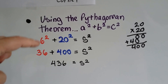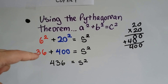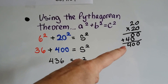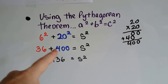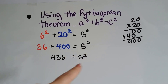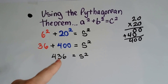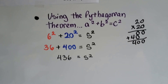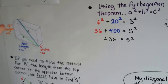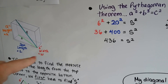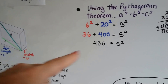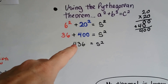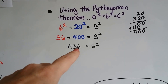6 squared is 6 times 6, that's 36. And 20 squared is 20 times 20, that's 400. We know 36 plus 400 is going to equal S squared, so 436 — 436 is S squared. We just did 6 times 6 and 20 times 20, and found that S squared, the hypotenuse, is going to be 436 inches squared.